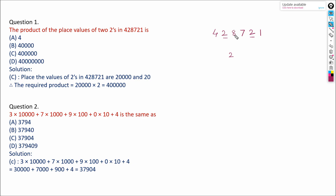Count the digits on the right-hand side: 1, 2, 3, 4. So write 4 zeros — that means the place value of this 2 is 20,000. Now for the second 2, we count only one digit to the right, so the place value is 20.